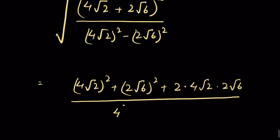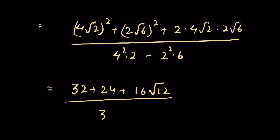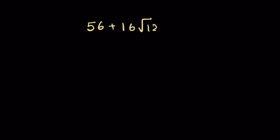So we can write: 4 times square root of 2 whole squared minus 2 times square root of 6 whole squared. Now a plus b whole squared equals a squared plus b squared plus 2ab. In the numerator: 4 squared times 2 is 32, plus 2 squared times 6 is 24, plus 2 times 4 times square root of 2 times 2 times square root of 6, which gives 16 times square root of 12. The denominator is 4 squared times 2 minus 2 squared times 6, which is 32 minus 24 equals 8.